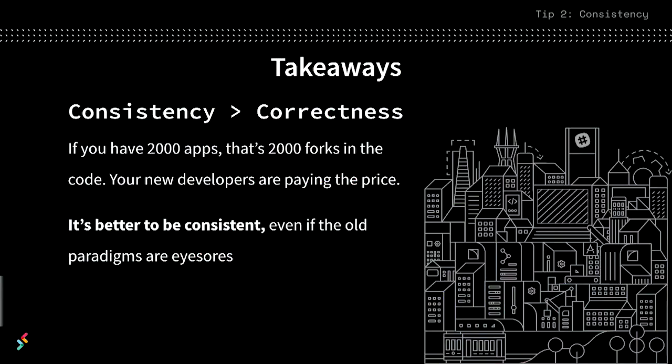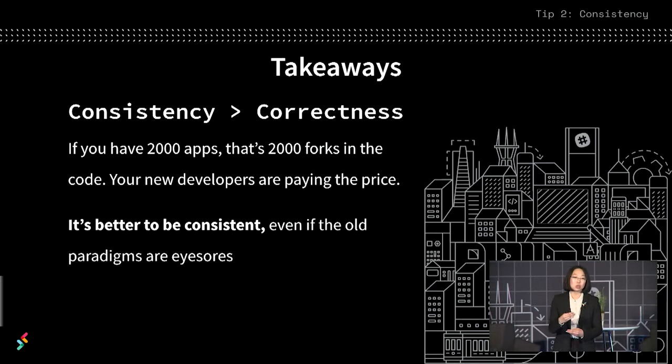Say you have 2,000 apps in your ecosystem, and each one of those apps has to fork their code for both the old name of a parameter and the new name. That's now 2,000 more forks, and you know who pays the price for that — it's actually the developers. So it's actually better to be consistent for cosmetic or superficial changes, even if the old ways of doing things are eyesores. Because it's really hard for new developers to come into a system where there are different names for what they think of as the same thing.